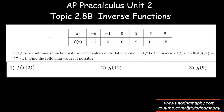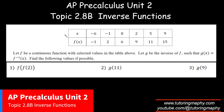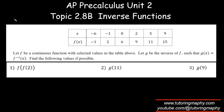Problem 2.8B: let f be a continuous function given in a table, and let g be the inverse of f. f(2) is straightforward — the value of f at x = 2 is 9. So f(f(2)) becomes f(9), and when x is 9 the functional value is clearly 15. So the answer is 15.